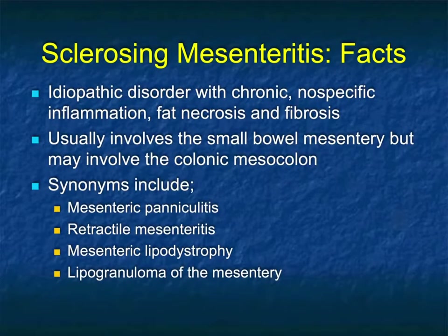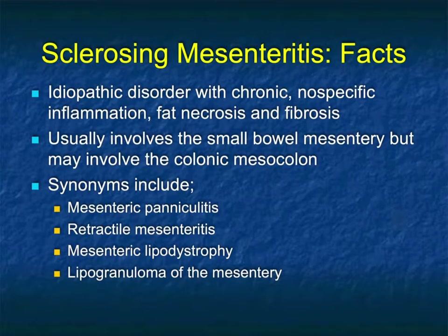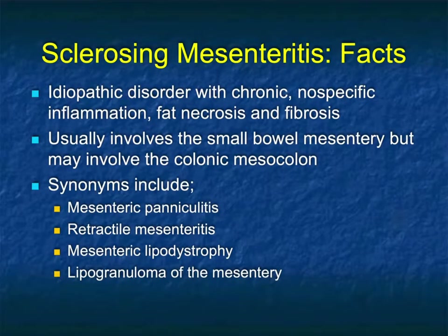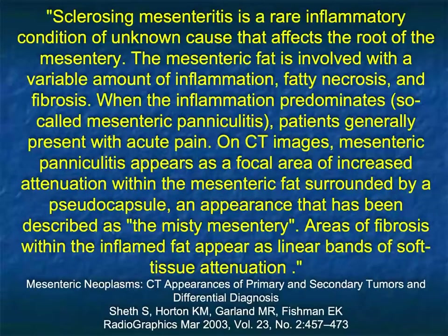Sclerosing mesenteritis is an idiopathic disorder with chronic nonspecific inflammation, fat necrosis, and fibrosis. It usually involves the small bowel mesentery, but can involve the colonic mesocolon or both. It went by many different names in the past: mesenteric paniculitis, retractile mesenteritis, mesenteric lipodystrophy, or lipogranuloma of the mesentery. These days we're settled on sclerosing mesenteritis.